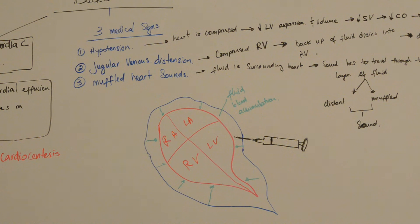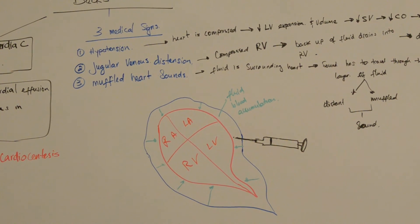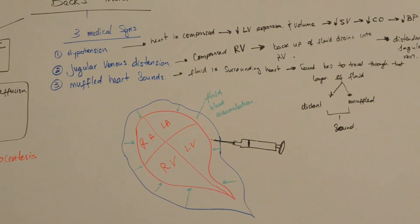So now the left ventricle is compressed, and that way it limits the diastolic expansion and filling of the left ventricle, resulting in a lower end-diastolic volume, which will reduce the stroke volume.